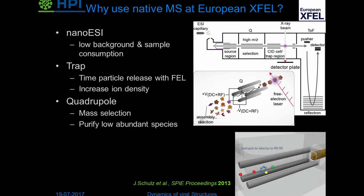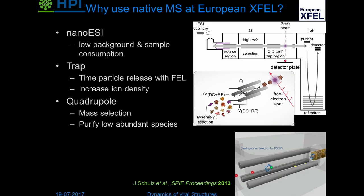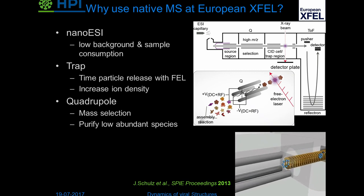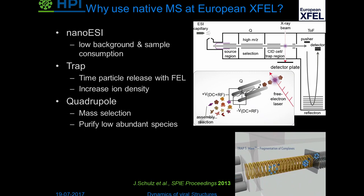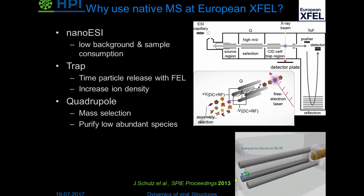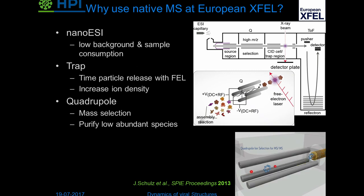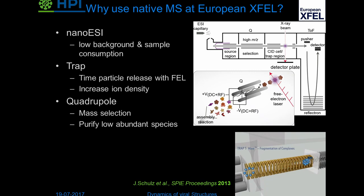This brings us back to native mass spectrometry, where we can do all this. We have the nano-electrospray source up front which gives us low — or controllable — background and low sample consumption. This comes with the drawback that we have few particles to hit, but since we're dealing with ions we can trap them and time the particle release with the free electron laser pulses to make up for the low ion density. Then we have the quadrupole, which allows us to single out the species we want to look at, thereby purifying low-abundant species.